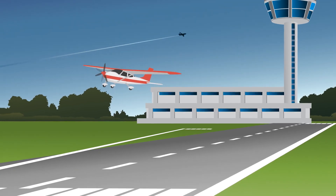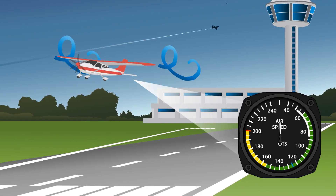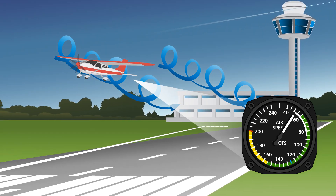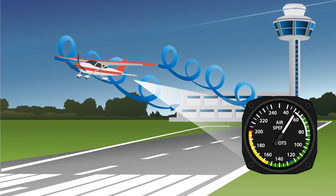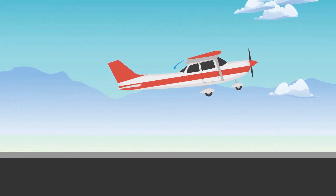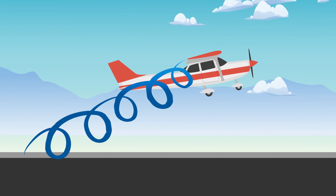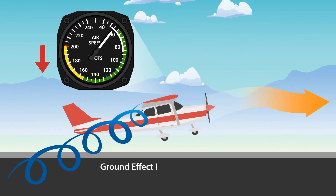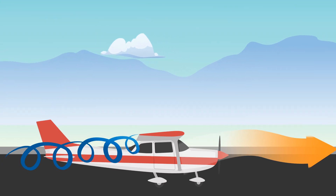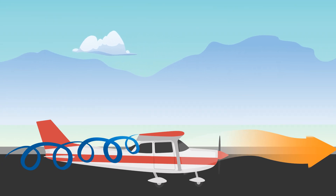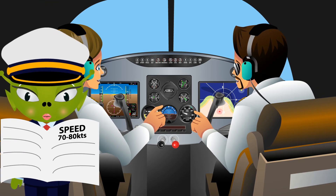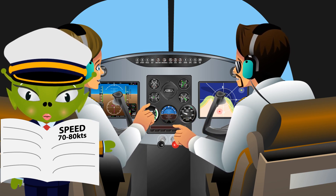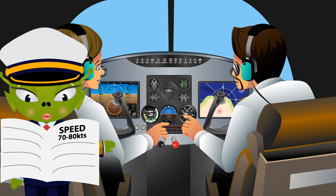During takeoff, an aircraft may seem to be capable of takeoff well below the recommended takeoff speed because of the reduction of drag. But once out of ground effect, with an increase of induced drag and a reduced airspeed than required, the aircraft will settle back to the runway. The pilot should not attempt to force an aircraft airborne without being at the manufacturer's recommended airspeed first.